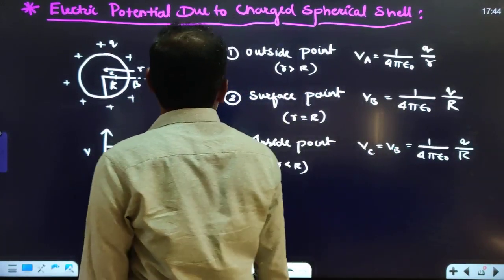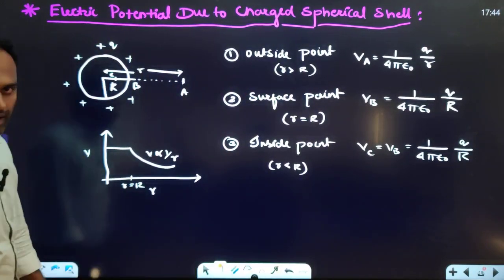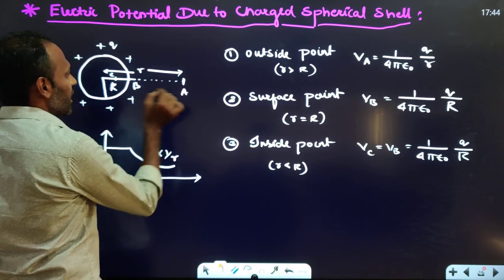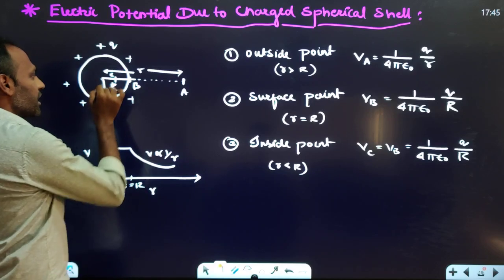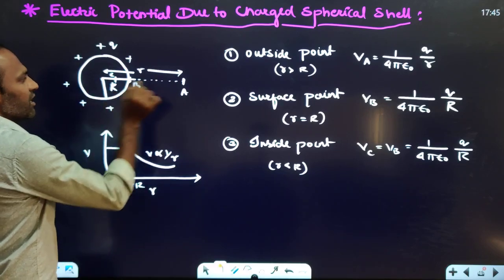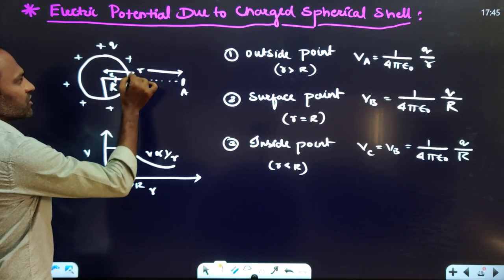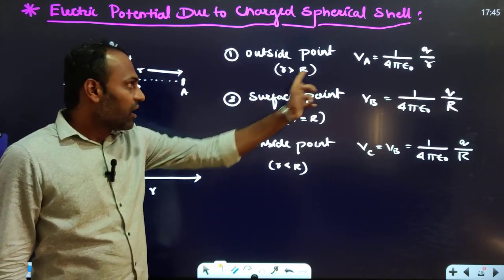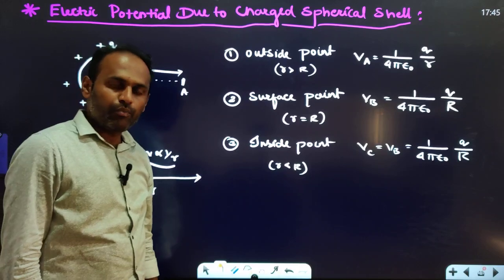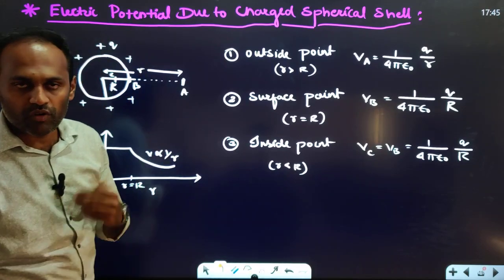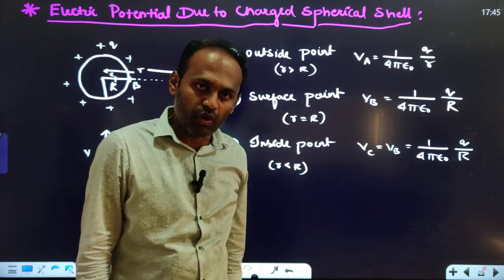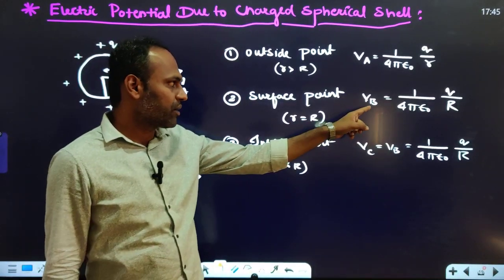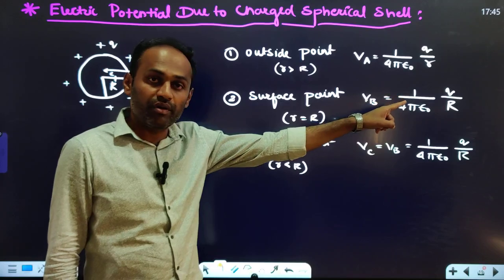Electric potential due to a charged spherical shell: consider outside point A, surface point B, and inside point C, with sphere radius R and charge Q. For an outside point where r > R, potential = (1/4πε₀) × Q/r — same as for a point charge. For a surface point where r = R, potential = (1/4πε₀) × Q/R.